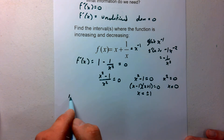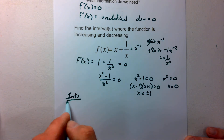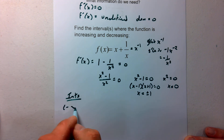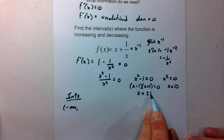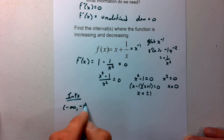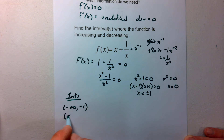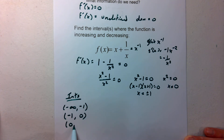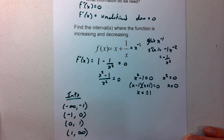I'm going to set up my interval chart. Starting at negative infinity, I'll make a pit stop at each critical value: negative 1, 0, and 1. So my intervals are negative infinity to negative 1, negative 1 to 0, 0 to 1, and 1 to infinity.